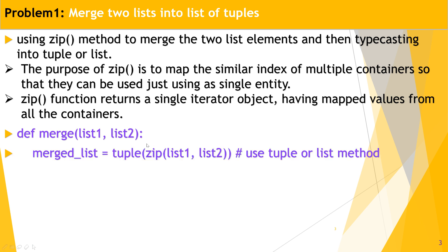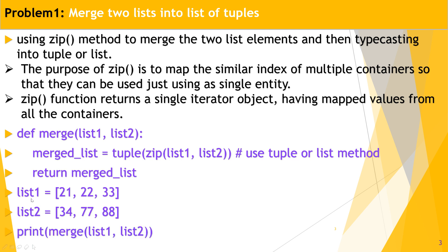The zip function takes one element from each container — list or tuple — passed as arguments, and makes them a single iterator object value. So create again a merge function, pass two lists to it, and use the zip method with list1 and list2 as arguments. Each element from list1 and list2 is collected and forms a tuple if you use the tuple constructor, or a list if you use the list constructor. This is automatically saved into the merge list variable, which is then returned.